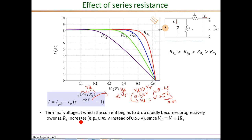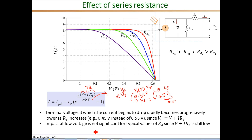As mentioned, the terminal voltage at which the current begins to drop rapidly becomes smaller as the resistance increases — in this example, 0.45 volts instead of 0.55 volts with a very small resistance value. The impact of series resistance on the IV characteristic is not very significant at low voltages; all four curves with very different series resistance values actually converge at low voltages.